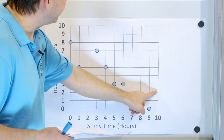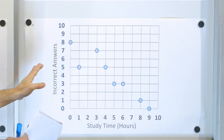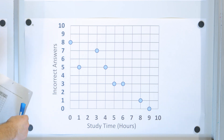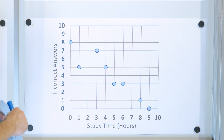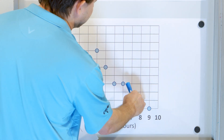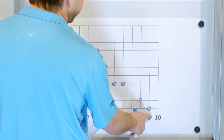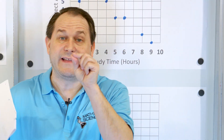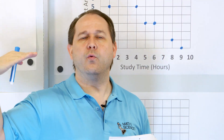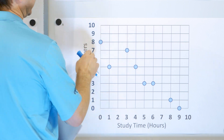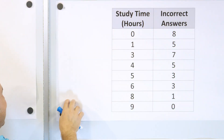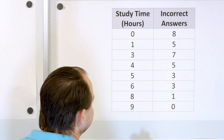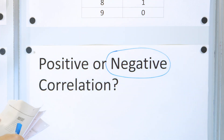Here's our scatter plot that we've drawn. You can see you plot these things just like XY points. Looking at it, if I were to draw a line through this data, there would pretty clearly be some sort of relationship that slopes downward. As the number of study time hours increases, the incorrect answers go down. Remember — if both data points go up like in the fish example, that's positive correlation. If one goes up while the other goes down, sloping downward, we call that a negative correlation. That's pretty clearly a negative correlation here.